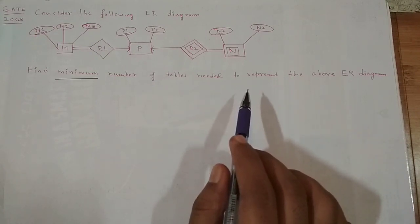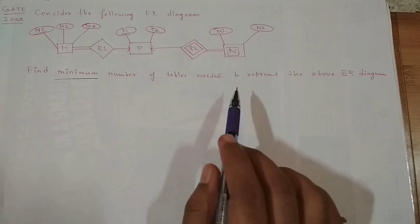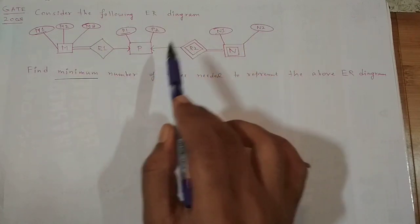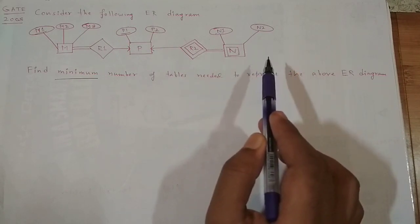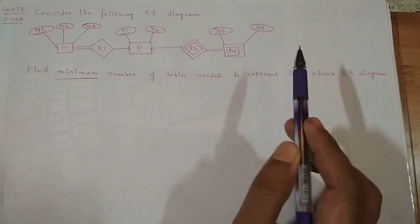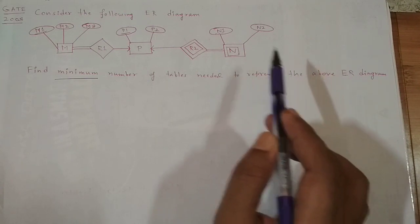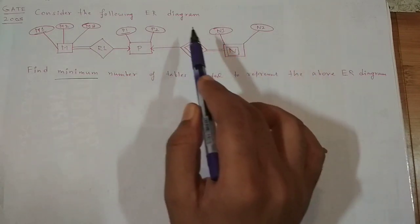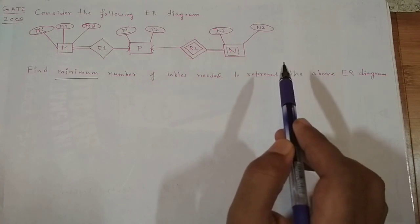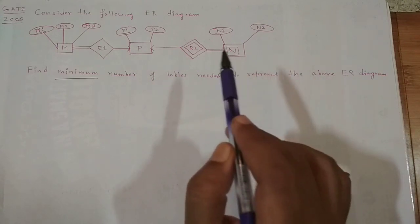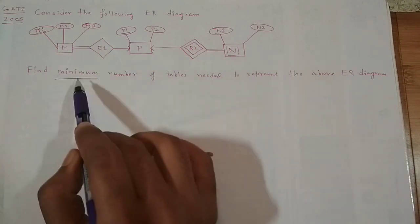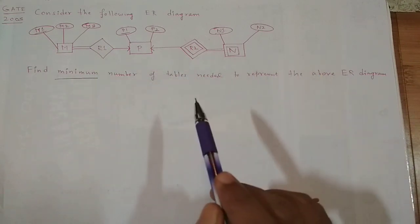This essentially is a problem to convert an ER diagram into an equivalent relational model representation. That means we'll take this ER diagram and convert it into relations, and find how many relations or tables we need at minimum.